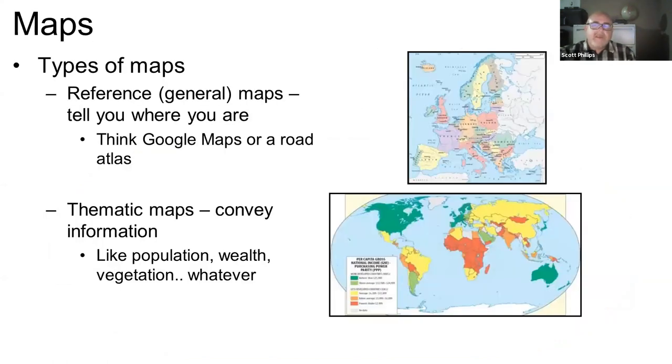We can also look at types of maps depending on the purpose you're using them for. There are reference or general maps. These really are about navigating and telling you where you're at. Google Maps is a good example of that. Google Maps is really about getting around your world and understanding where things are in general.